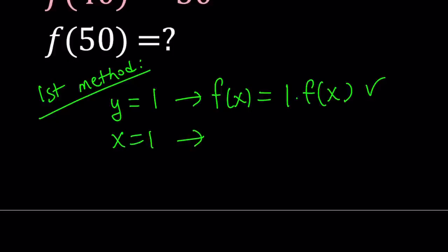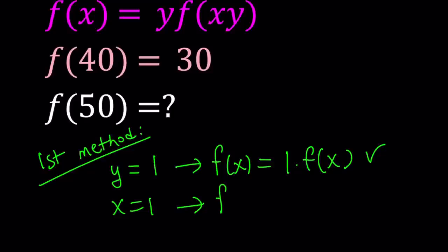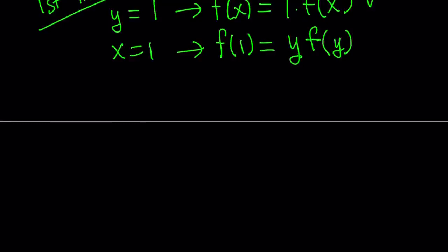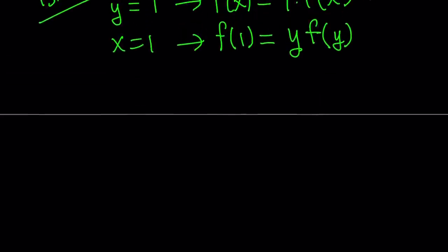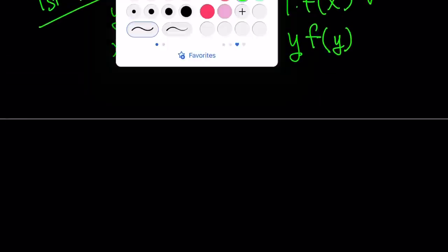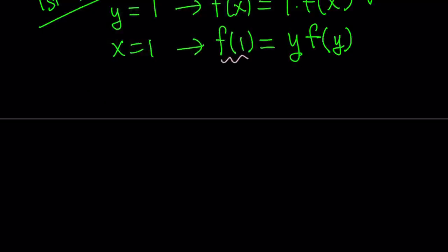Anyways, x equals 1 gives us, let's see what happens. If x equals 1, then I get f of 1 equals y times f of 1 times y, which is f of y. So this is definitely much better than the first one, because it gave us f of y and a y and an f of 1. This is really nice because f of 1 is a constant, so I can go ahead and set it equal to c.